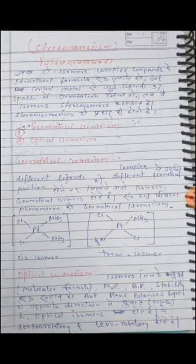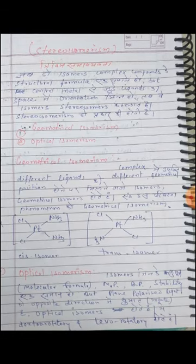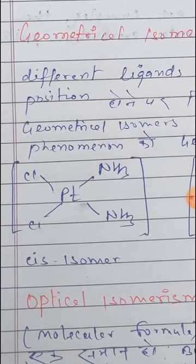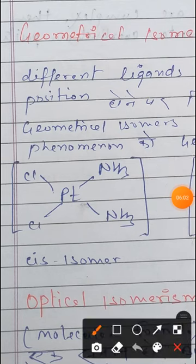بچوں، یدی کسی complex میں ligands کی position change کریں اور bond angle change دکھائی دیں، تب ہم کہیں گے کہ وہ compound geometrical isomerism show کرتا ہے۔